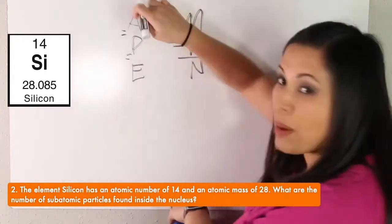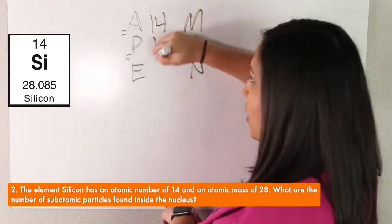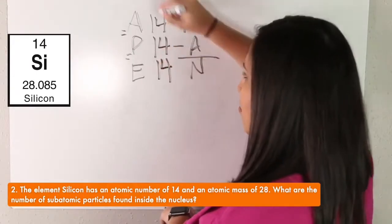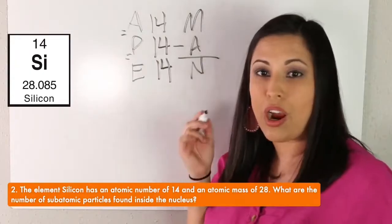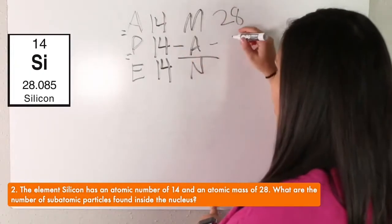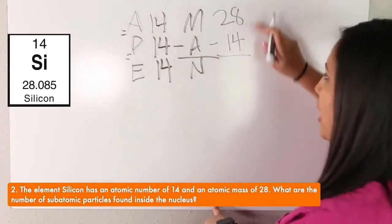Okay, our atomic number, it gives it to us. So that is 14. How many protons? 14 and electrons. Remember, those numbers are the same. What's our mass? It gives us that too. Our atomic mass is 28. Minus our atomic number. How many neutrons do we have? 14.